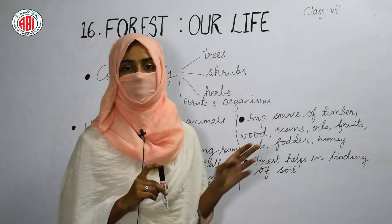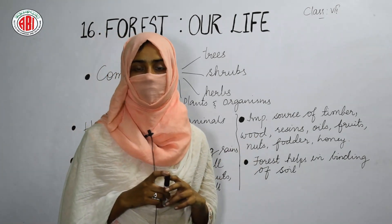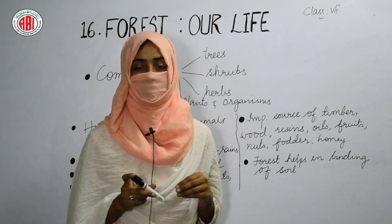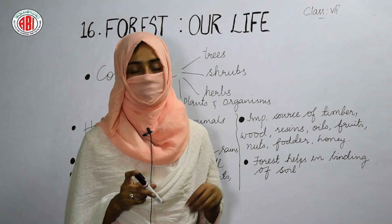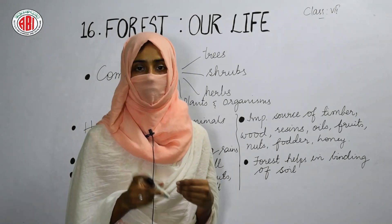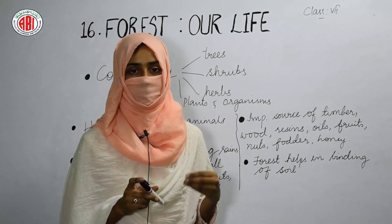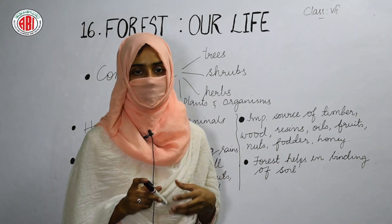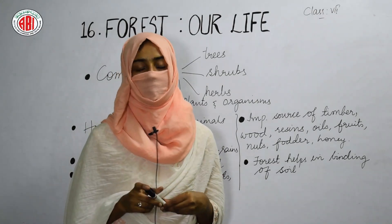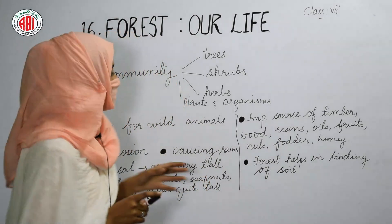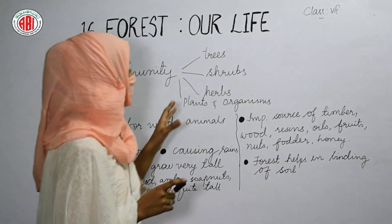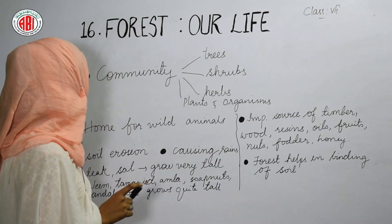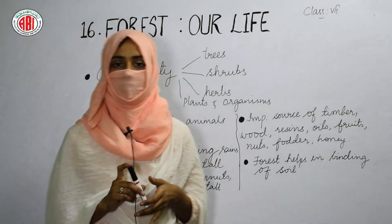These are beneficial products that we get from the natural resource called forest. It is very important for us to maintain the forest and not destroy or damage it, because it is a renewable natural resource providing many things useful for human consumption. Forest also controls soil erosion.